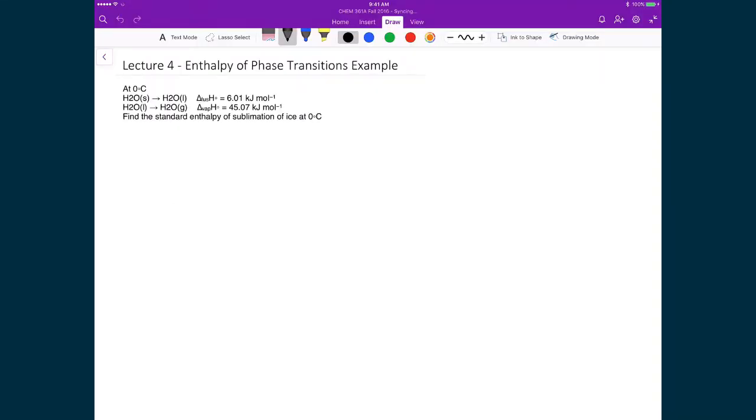So let's now calculate the standard heat of sublimation of ice at 0 degrees Celsius. What we're given basically is the standard change in enthalpy of fusion and the standard change in enthalpy of vaporization. So what we're going to do is we're going to use Hess's law to basically determine what is the standard heat of sublimation. So this process, what it looks like is we're changing H2O solid to H2O gas.